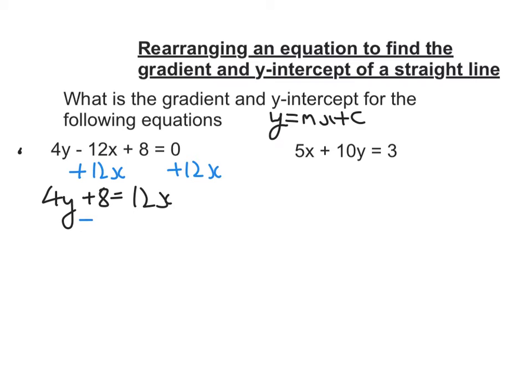And if I do that I get 4y plus 8 is equal to 12x. Now I'm going to take away the 8 from both sides and I get 4y is equal to 12x minus 8.